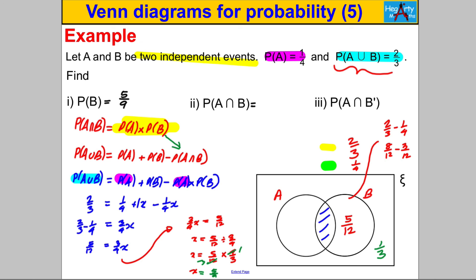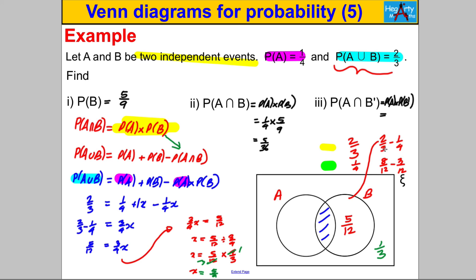P(A∩B) = P(A) × P(B) = one-quarter × five-ninths = five-thirty-sixths. Since A and B are independent, A and not-B are also independent: P(A∩B') = P(A) × P(B') = one-quarter × four-ninths = one-ninth. That was a particularly hard question — it shows that sometimes you need the formulae, sometimes the Venn diagrams, and often a combination of both. Thanks for watching.